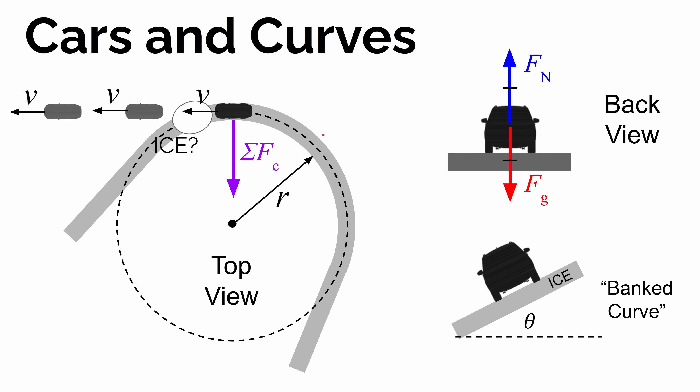So if there was no frictional force on a flat road, a car couldn't actually follow a curved path — it couldn't change its direction. But it actually could if that road was banked. If the road was angled, even if there was negligible friction, that car could actually follow a circular path at a constant speed. We're going to talk about the physics of how that's possible and how to solve quantitative and symbolic problems related to banked curves.